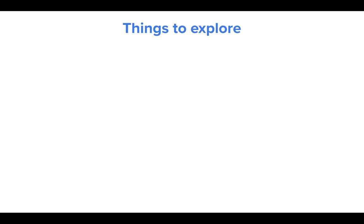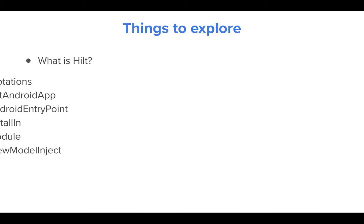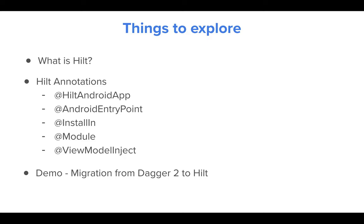Let's quickly go over what we are going to explore today. First, we'll discuss what Hilt is, then we'll jump into the Hilt annotations you need to know to build an app that uses Hilt as a dependency injection framework. We'll also show a demo by migrating the previous app built with coroutines, Flow, and Room database from Dagger 2 to Hilt.